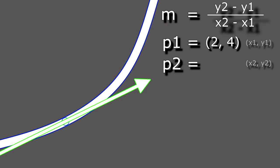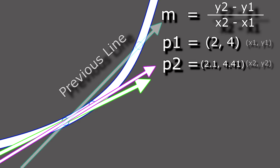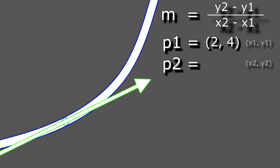So let's choose one closer, like, I don't know, 2.1 and draw a line. Huh, when we moved the second point closer, the line between them was more like the line we want to find at x equals 2.